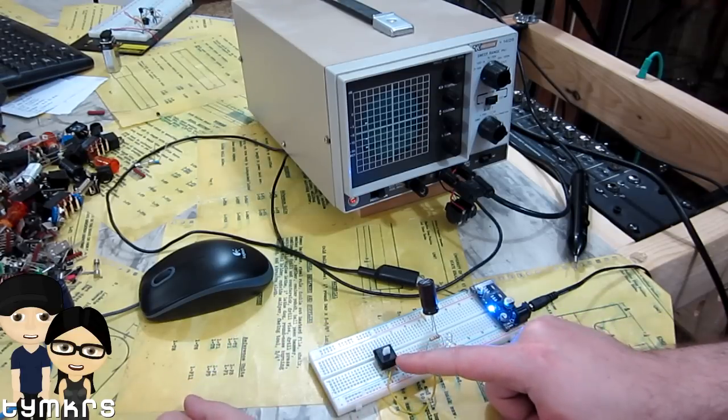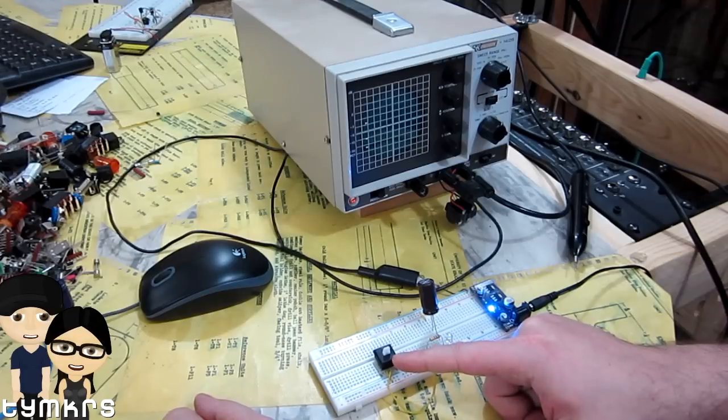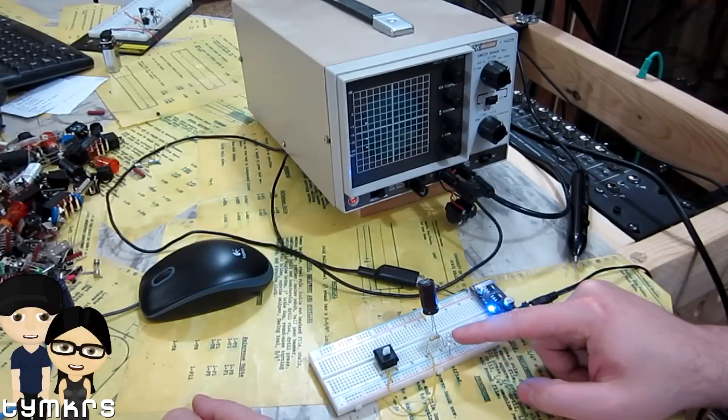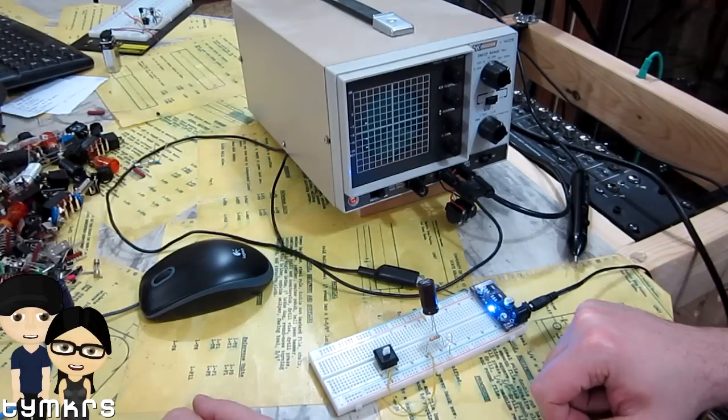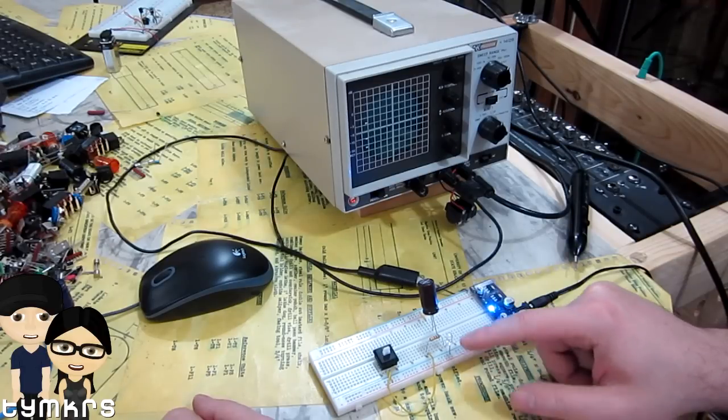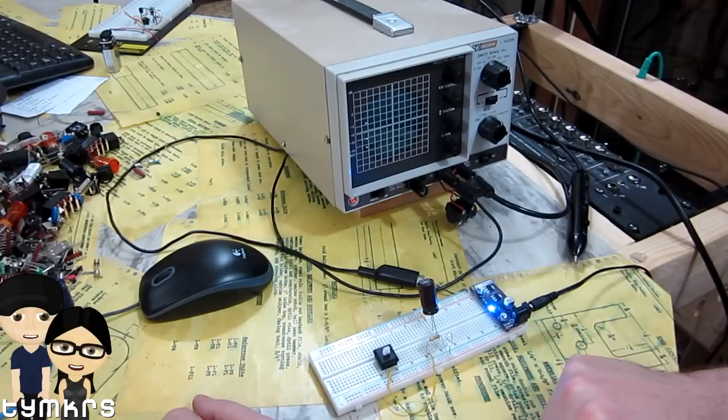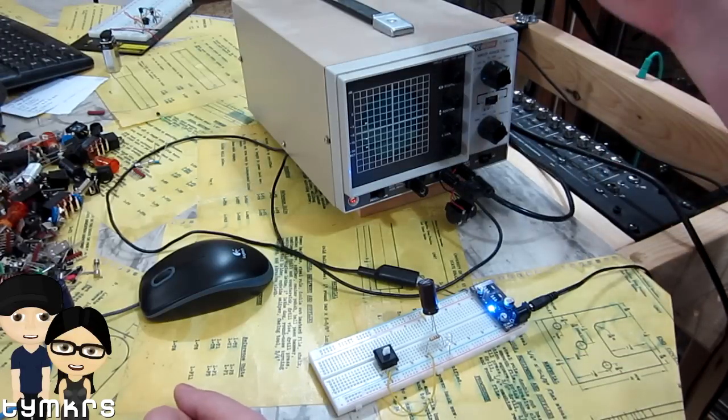What we have here is ones and zeros coming in here, and then on the other side of the RC filter we have an analog output. You can vary the voltage coming out by varying how often that switch is on and how often it's off.